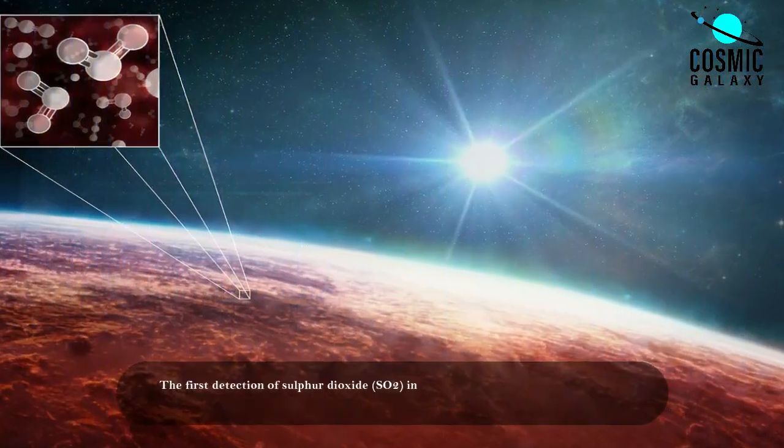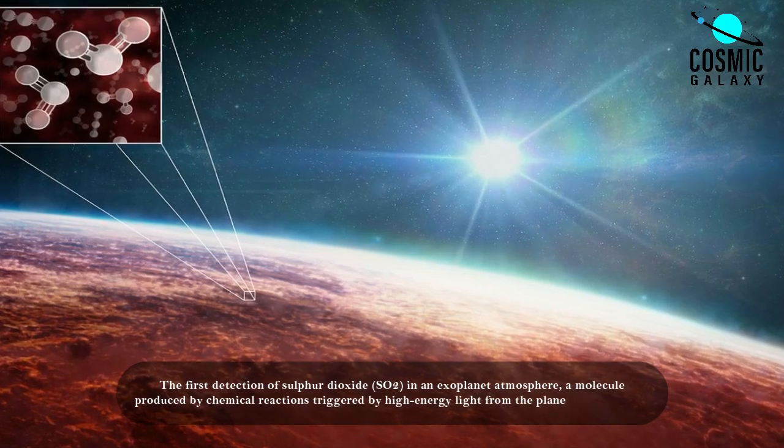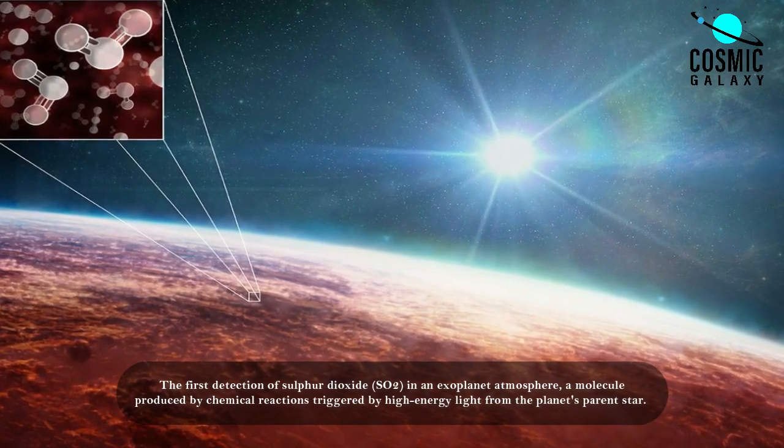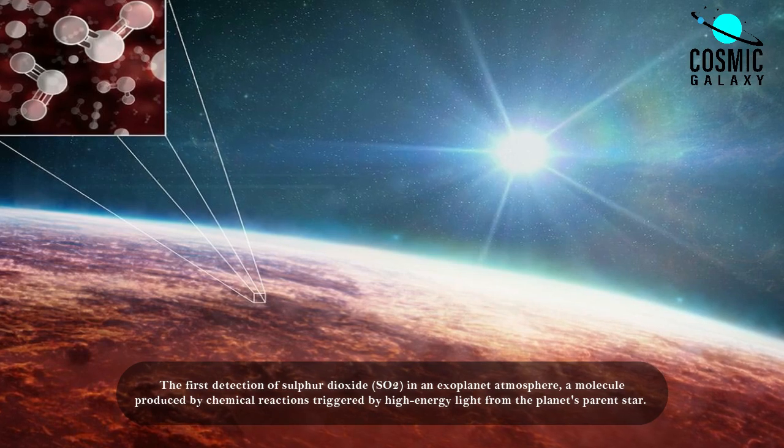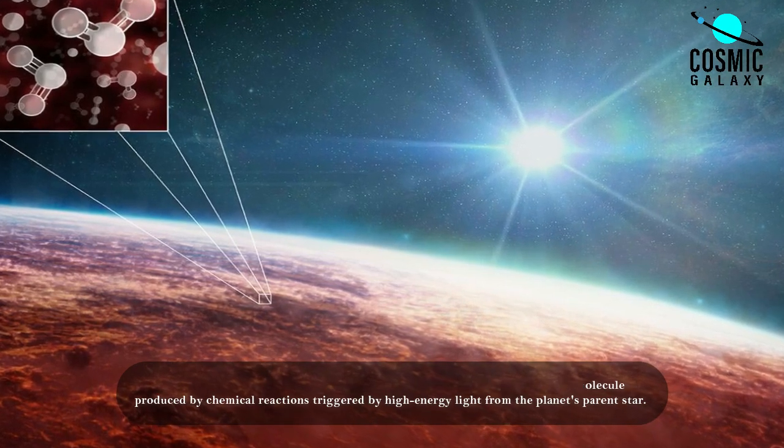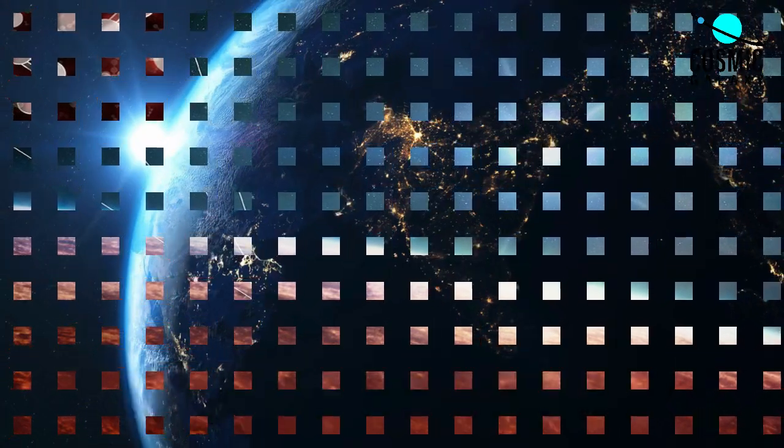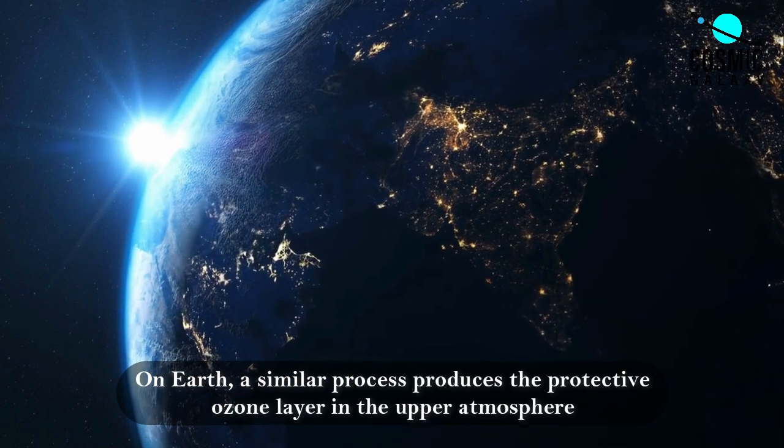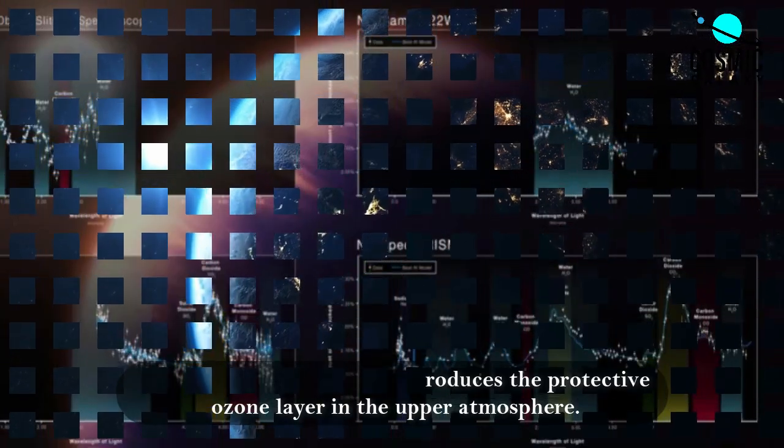The first detection of sulfur dioxide, SO2, in an exoplanet atmosphere, a molecule produced by chemical reactions triggered by high-energy light from the planet's parent star. On Earth, a similar process produces the protective ozone layer in the upper atmosphere.